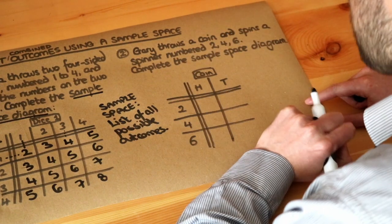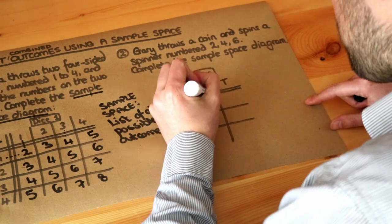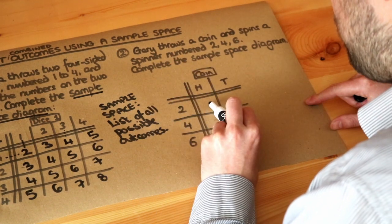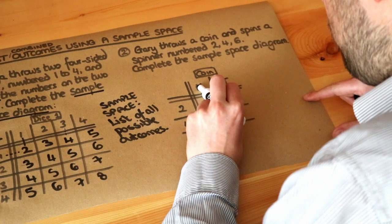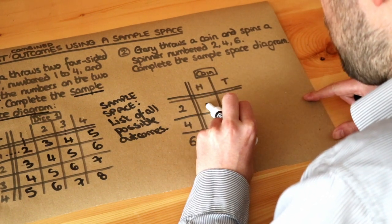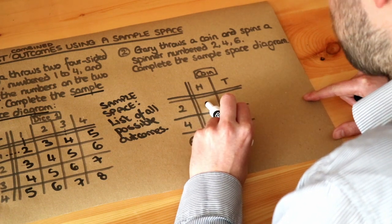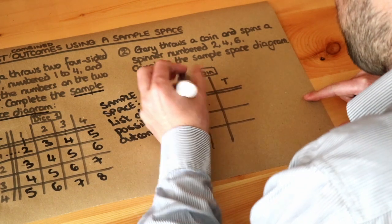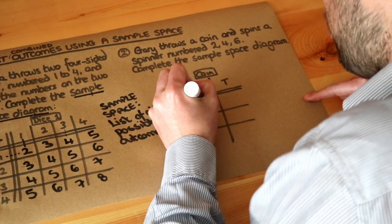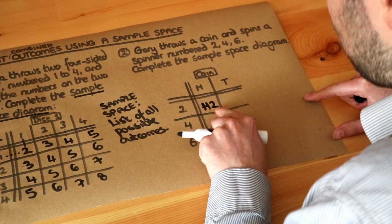So if we're in this square, for example, this part of the sample space diagram, if we look at the column we've got heads, and if we look at the row we spun a two on the spinner. Now to combine them, you can't really add them together—you've got a letter and a number—so we can just write them together. We could either write 2H or H2. That's just a way to indicate what we've got on the coin and the spinner. So either H2 or 2H, either way it's showing that we've got a heads and a two.